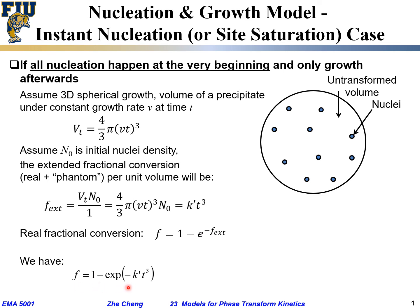Substituting f_ext = k′t³ into this equation, the real fraction of conversion for the instant nucleation / site saturation case is: f = 1 − exp(−k′t³). This still follows the nucleation-growth model, except all nuclei form at t = 0 and only growth occurs afterwards.